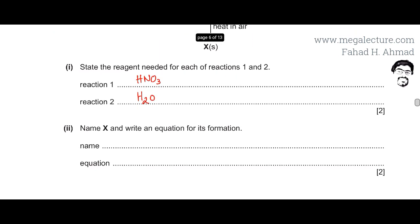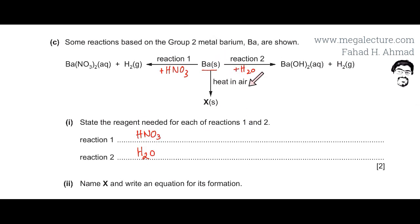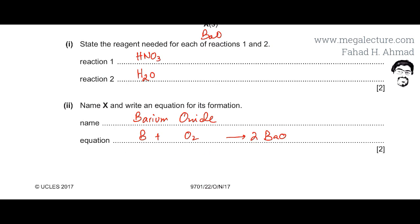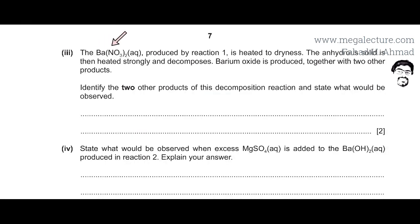The next part asks us to name compound X and write an equation for its formation. Barium is being heated in air, and the only reactive element in air is oxygen, O2. So the reaction is between barium and oxygen, and the compound formed is barium oxide. The equation is: 2Ba + O2 → 2BaO.